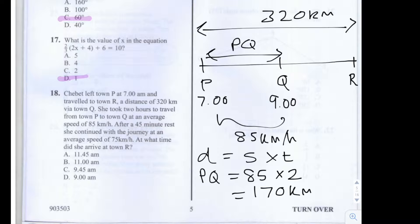The distance from P to Q is 170. Let's mark that here onto our timeline. We know that we can now work out the distance Q by doing 320 subtract 170, and we end up with 150km as the distance from Q to R.